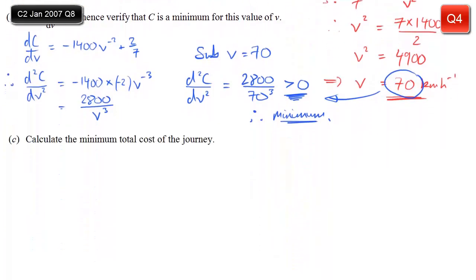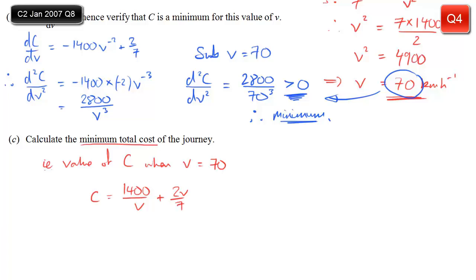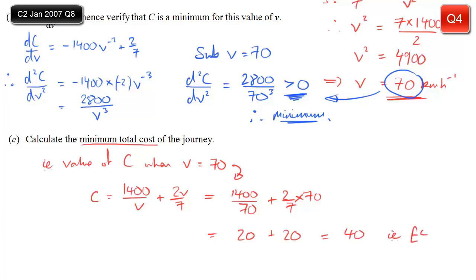Part C: find the minimum total cost. With v equals 70, substitute into c equals 1400 over v plus 2v over 7. That gives 1400 over 70 plus 2 sevenths of 70. 1400 over 70 is 20, and 2 sevenths of 70 is another 20. So the total cost c equals 40.